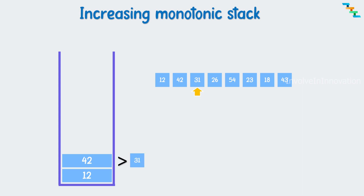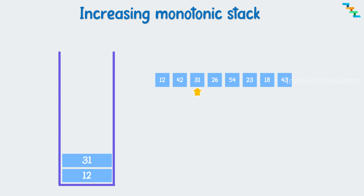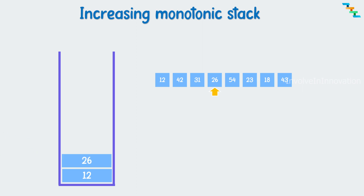Here we need to maintain the increasing order. Check the next element which is 31. 31 is less than the top of the stack, so we can't add 31 on top of 42. Remove the top of the stack which is 42, then check if 31 is greater than the top of the stack 12. Yes, so add 31 on top of 12. Check if the next element 26 is greater than the top of the stack 31. No, so remove 31. Check if 26 is greater than 12. Yes. Add 26 on top of 12. Check if the next element 54 is greater than the top 26. Yes. Add 54 on top of 26.